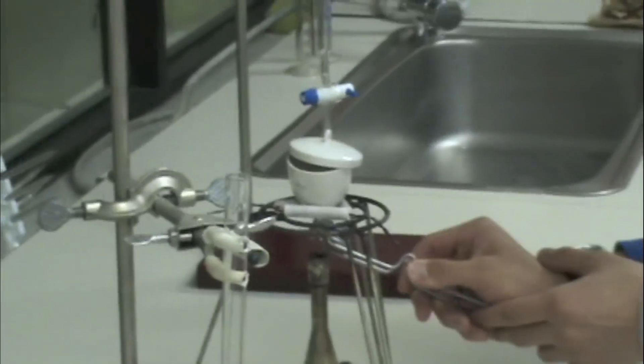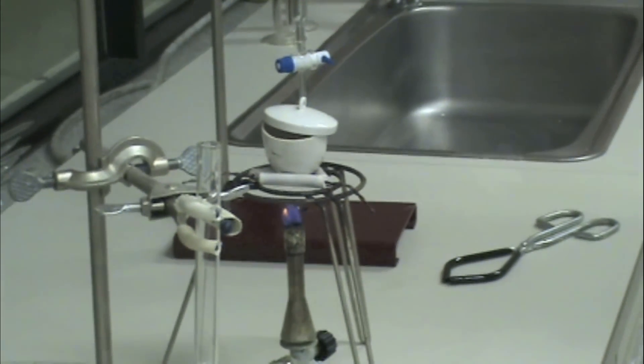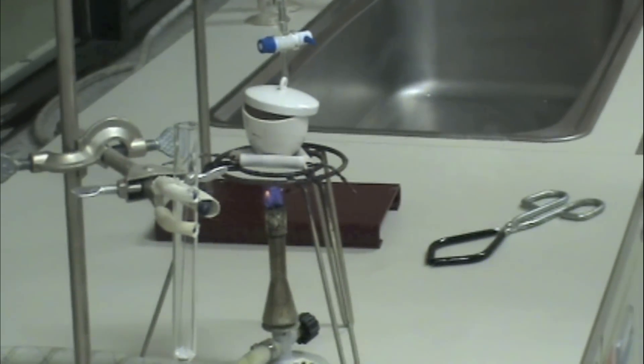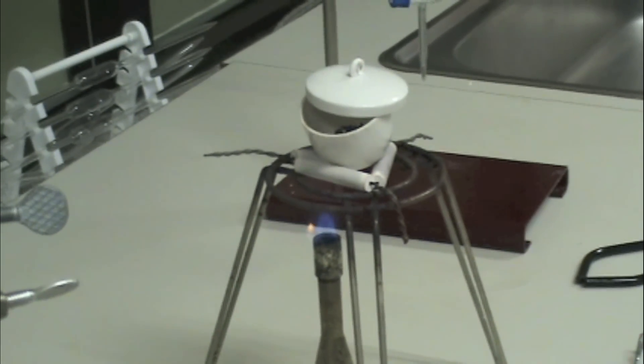Porcelain crucibles naturally absorb some weighable moisture from the air. So if you're planning to make measurements of mass, you need to dry the crucible so that there's only porcelain, no water. And to dry, we need to heat.